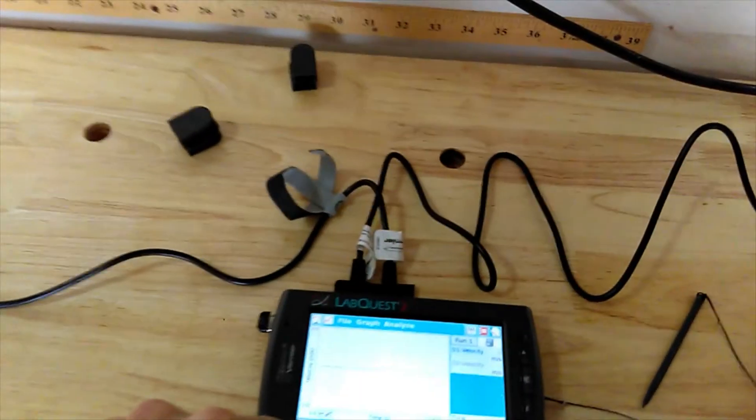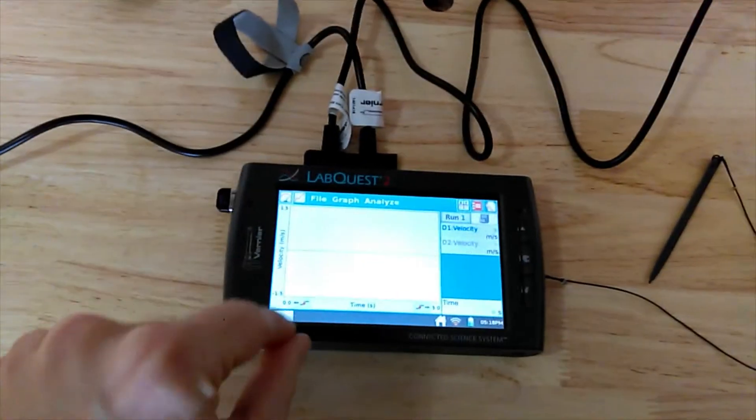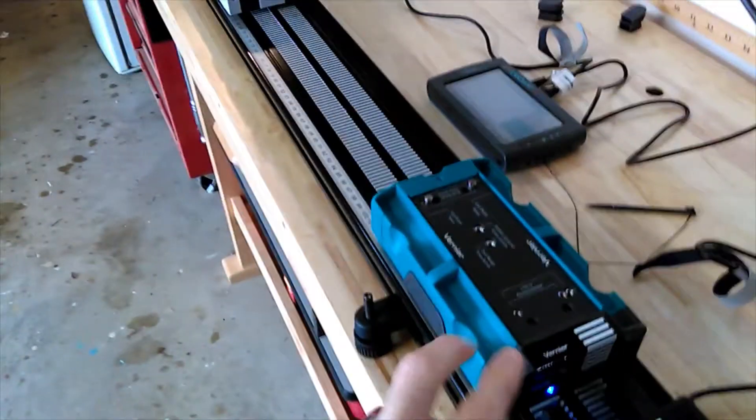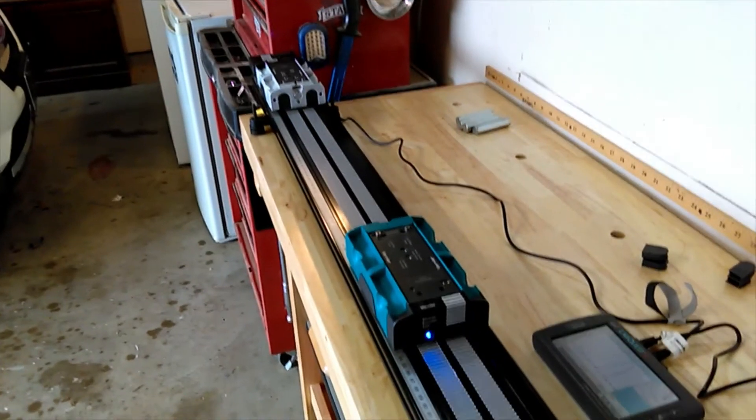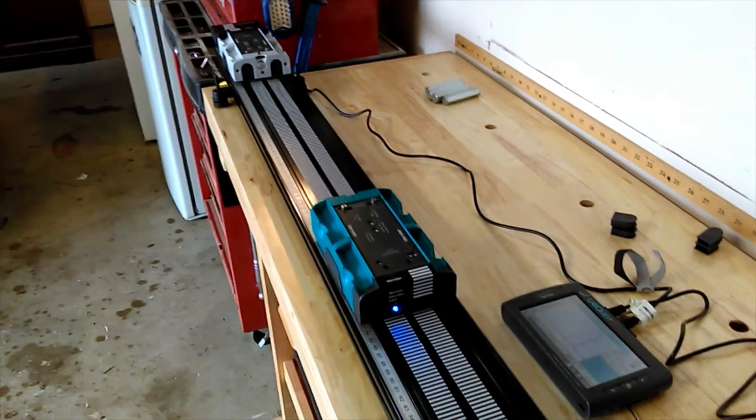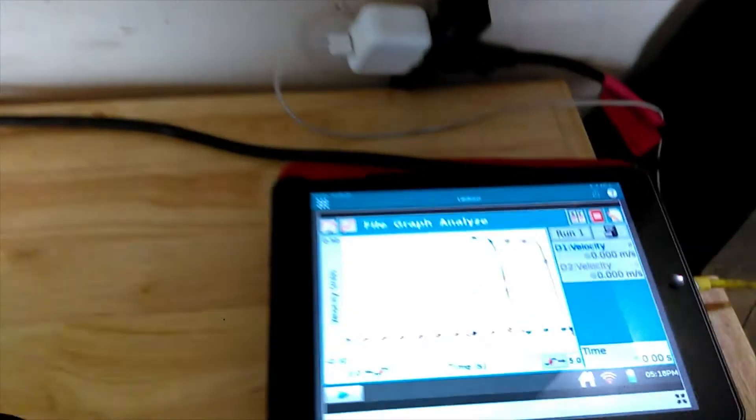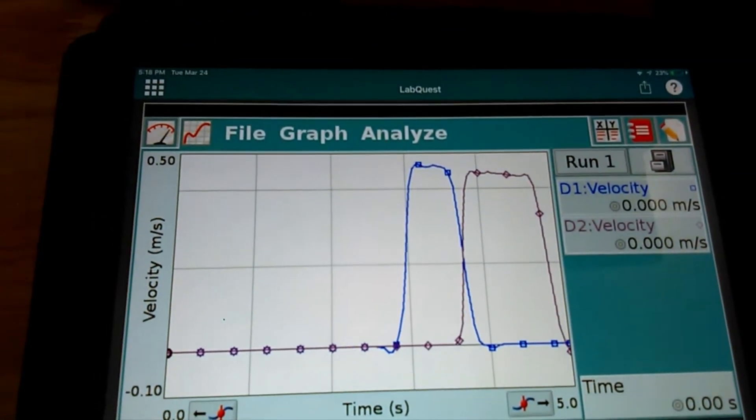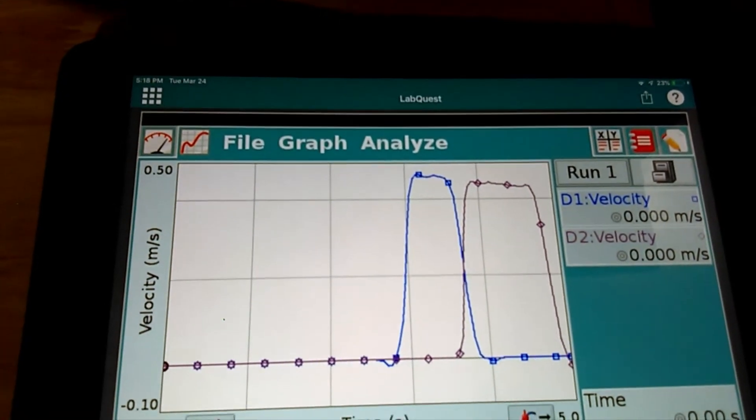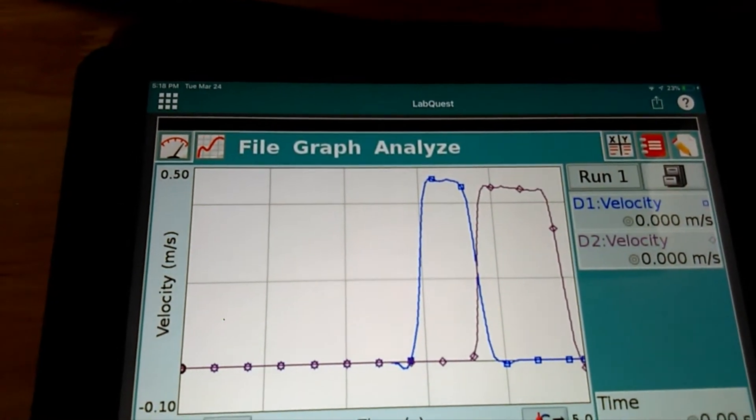Let's try run number four. I've got everything fixed up the way I want. I'll start my data collection, give car one a push. Car two heads to the end of the track. Car one comes to a stop right there.